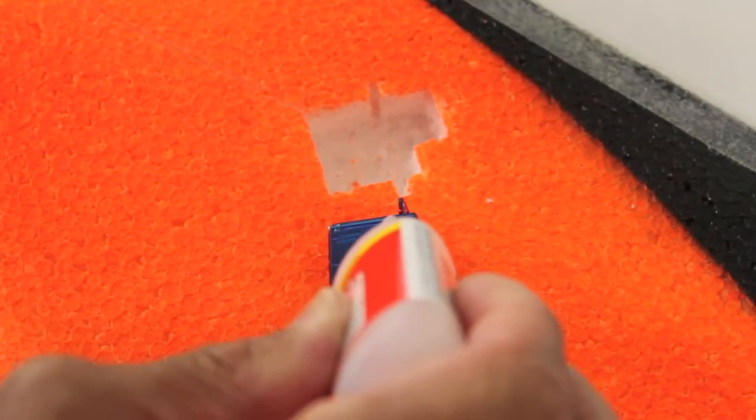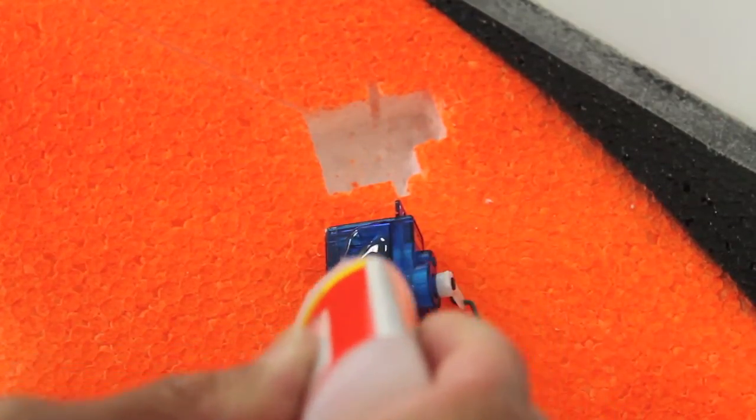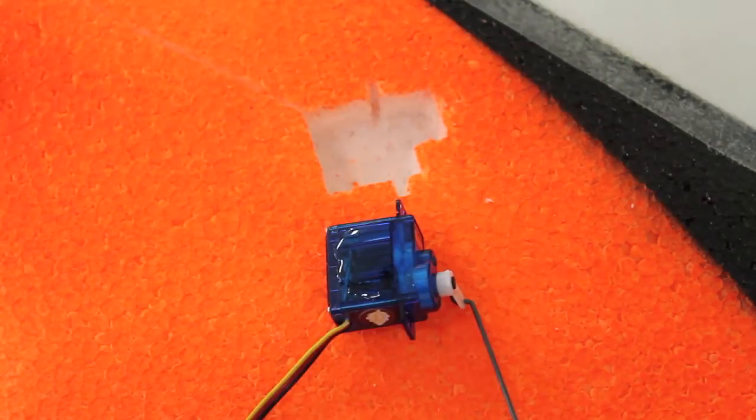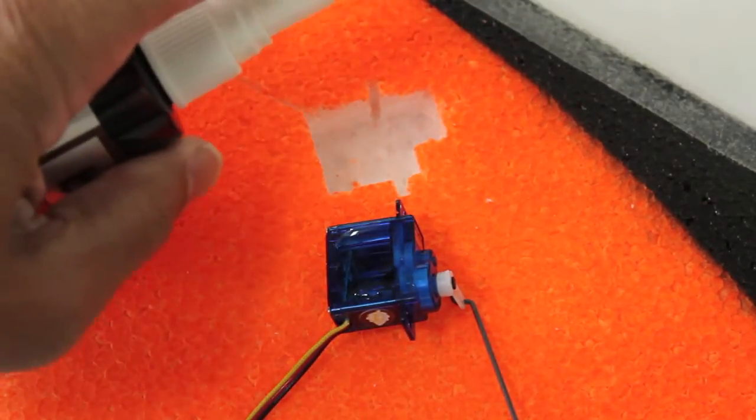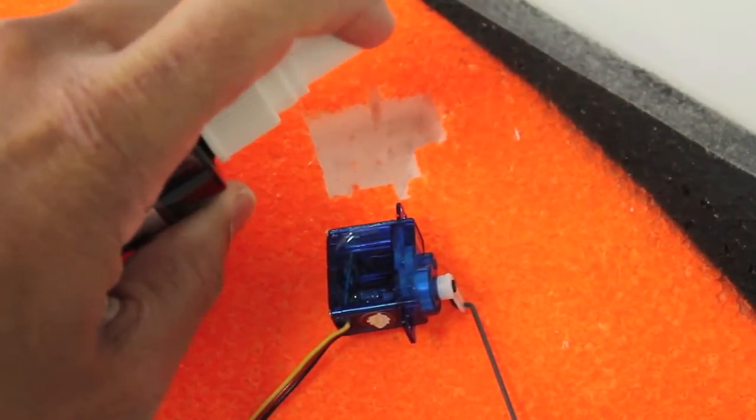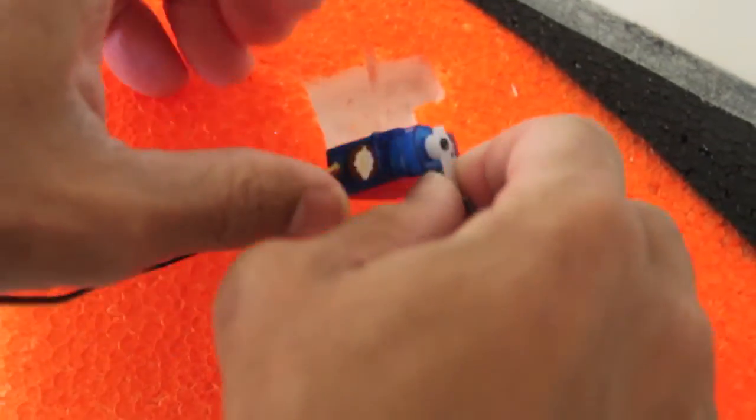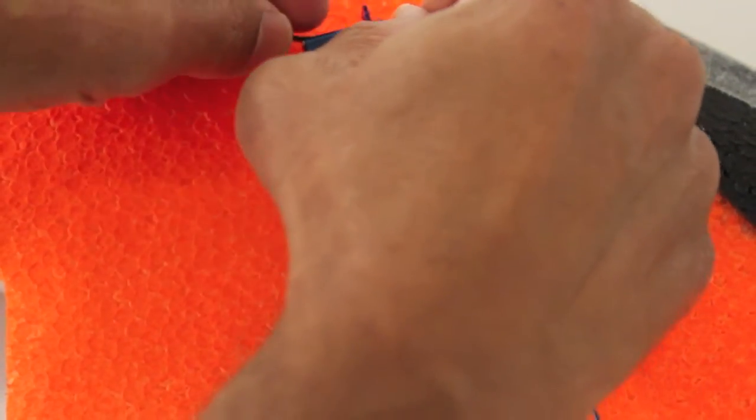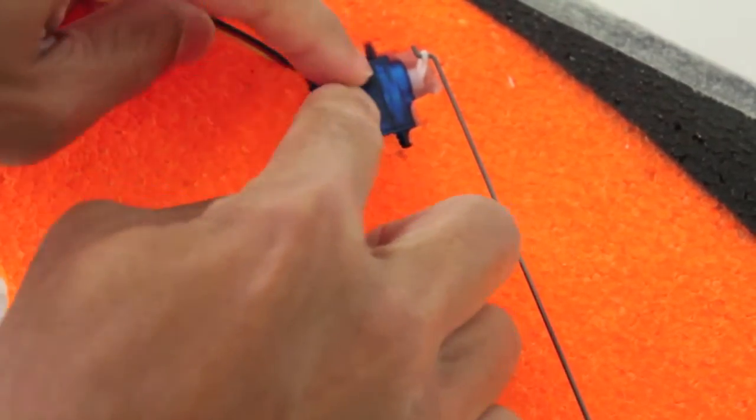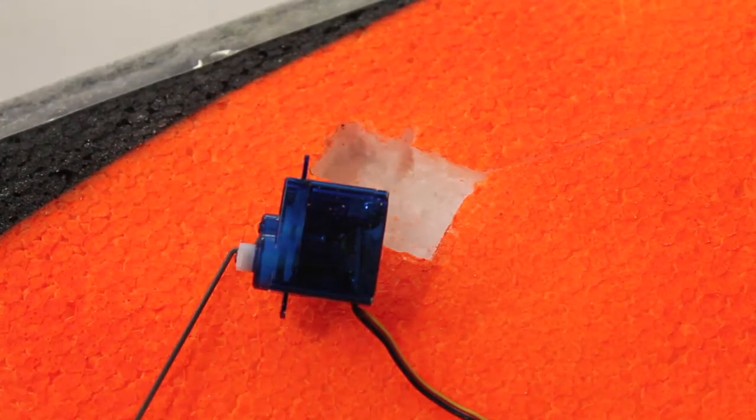We'll start with the bottom side of your servo, we're just going to put some medium CA glue on there. Just a nice little amount. And then in your servo mounting hole, let's spray some CA accelerator. We'll go ahead and flip this over, make sure everything is still intact, and we'll hold that down. We'll do the same thing with the other side.